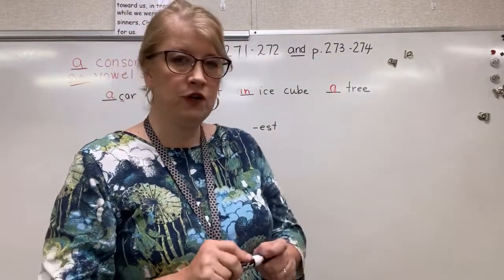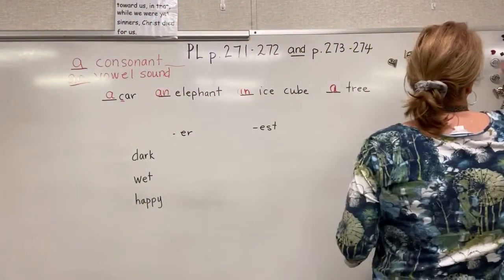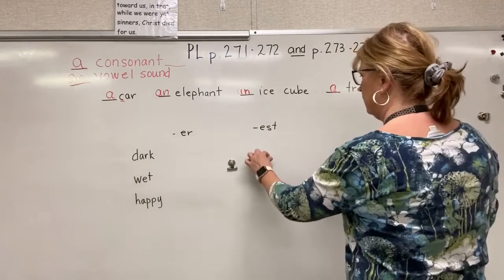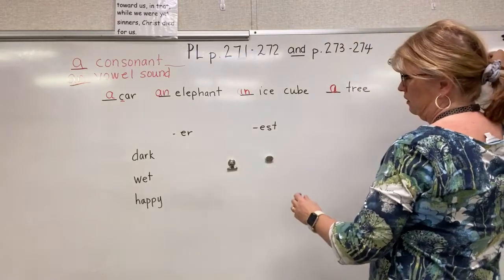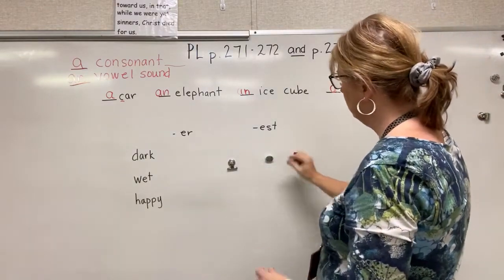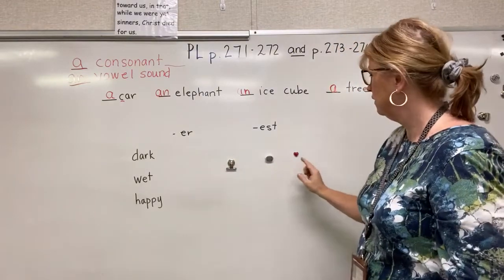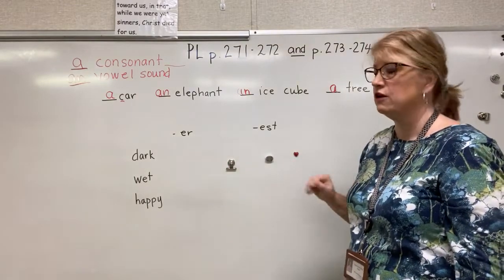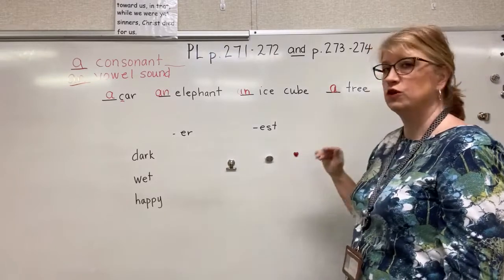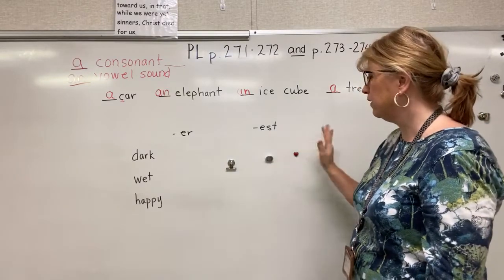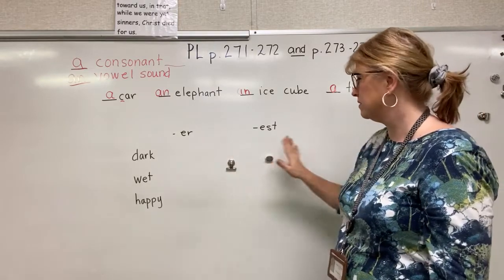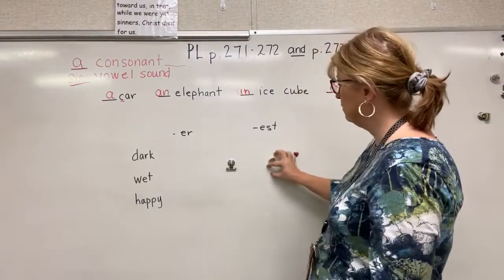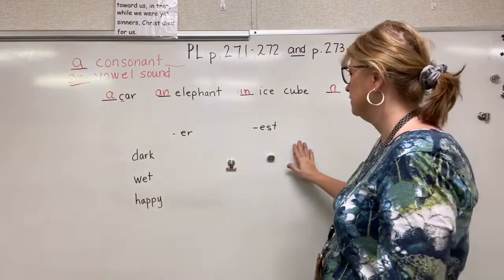Let me show you with these magnets. We have this one, this one, and this one. This one is the smallest, and this one is the biggest. So when comparing three magnets, we always use -est: biggest, smallest. This is the bigger one, this is the medium, and this is the smaller one — so this is the biggest and this is the smallest.